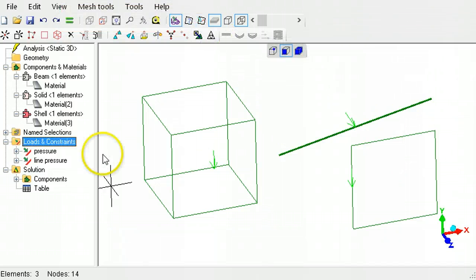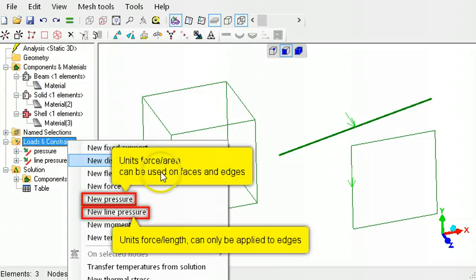The difference between the two pressure options, pressure and line pressure, is that line pressure is specified in units of force per length, while the other pressure is specified in units of force per area.